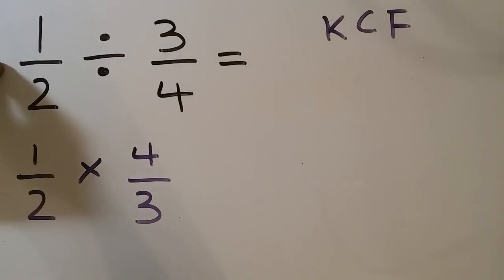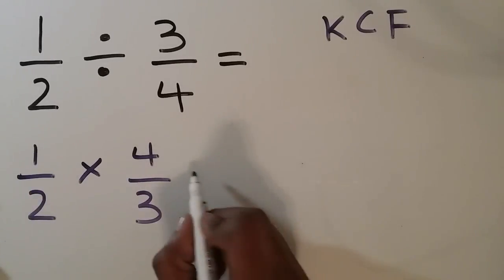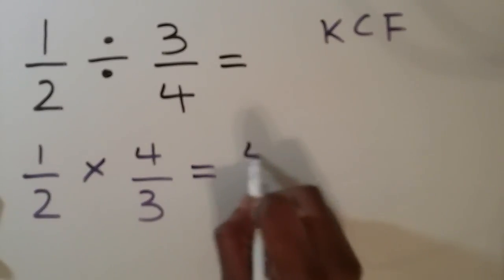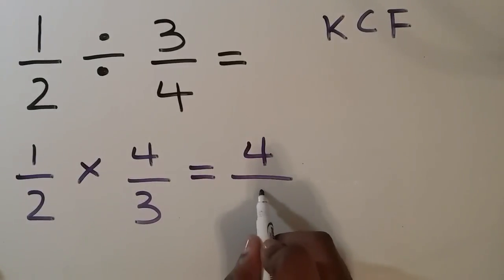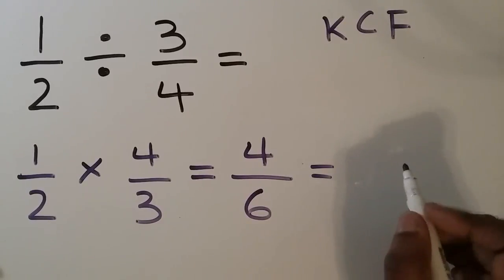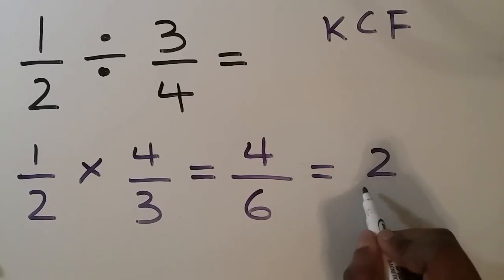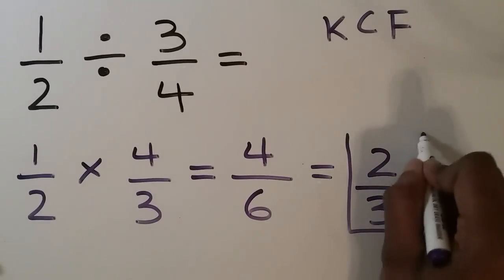And this would be rewritten as 1 half times 4 over 3. And then we would just multiply our numerators and multiply our denominators. And we would simplify if needed. And 2 over 3 would be our final answer.